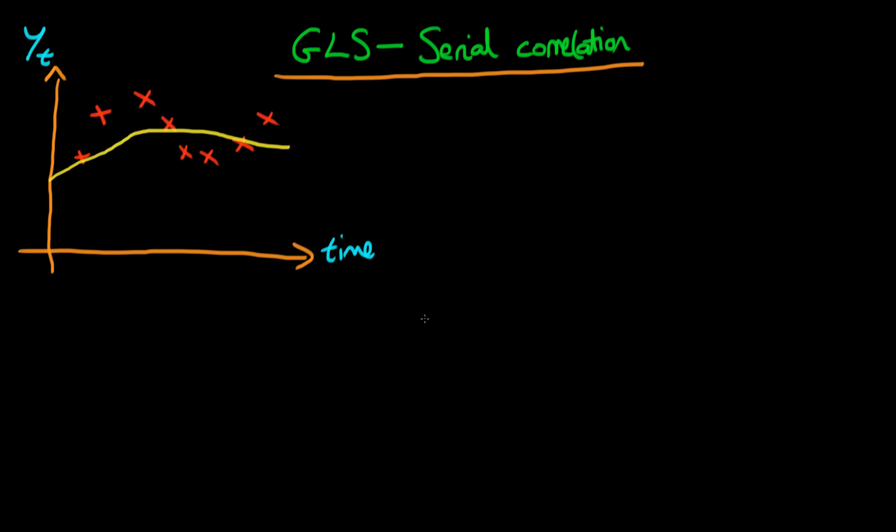In this video I want to talk about how we actually use GLS estimators to correct for the presence of serially correlated errors. The example I'm going to use is the case where we have yt being determined by one independent variable xt and we have an error which we call ut. Our fitted model might look something like this, which we've got on the left-hand side here.